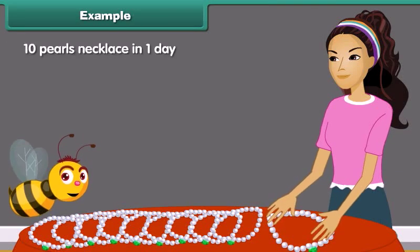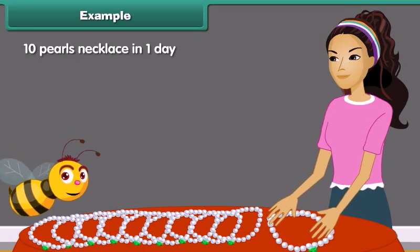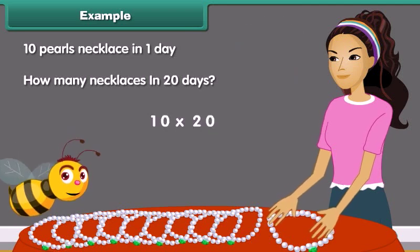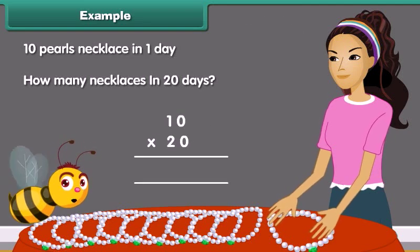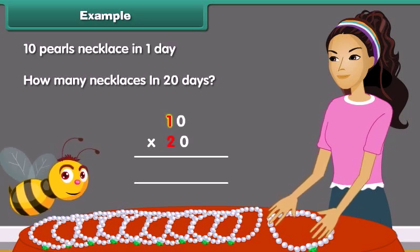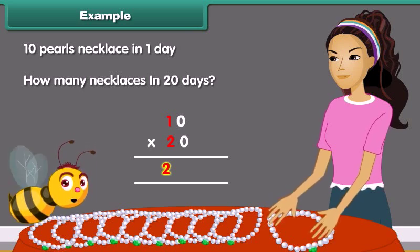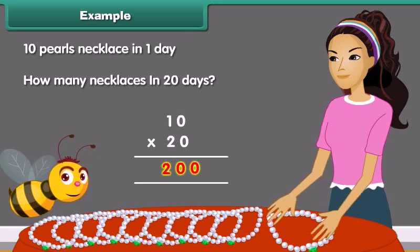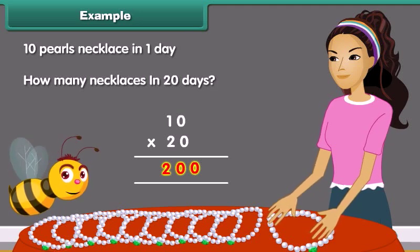Dinah makes 10 pearl necklaces in 1 day. In 20 days, she will make how many necklaces? We need to multiply 10 with 20. Step 1: Multiply the numerals without zeros. 2 multiplied by 1 is equal to 2. Step 2: Count and add the number of zeros toward the right side of the answer. In this case, we have 2 zeros. Thus, the final answer becomes 200.